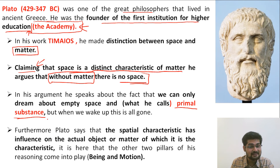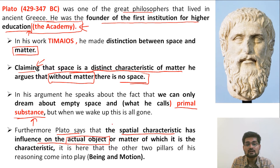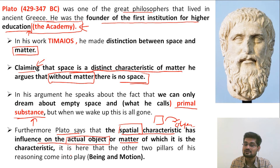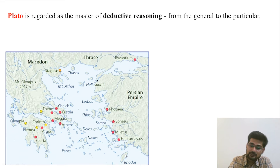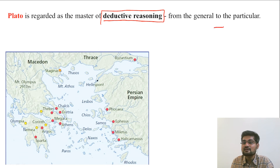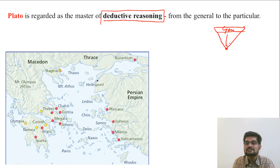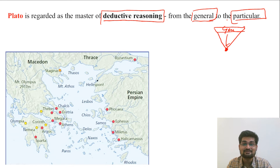Plato argued that a given space has its influence on the objects or matter within it as a constituent. He devised two pillars of understanding: the state of being — existence — and its movement, how it changes and transforms. Furthermore, Plato is regarded as the father of deductive reasoning, which is moving from the general to the particular. This kind of reasoning is still utilized by geographers, research scholars, and scientists today.